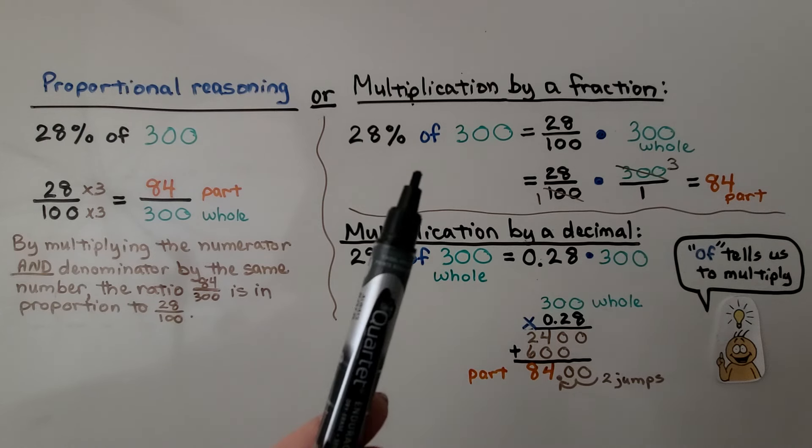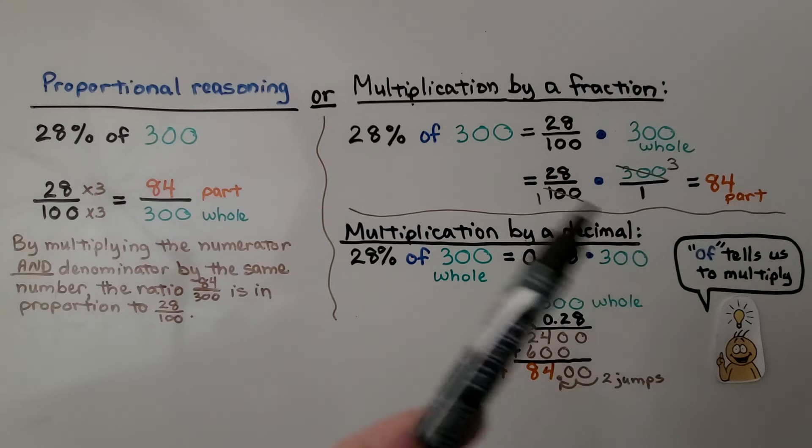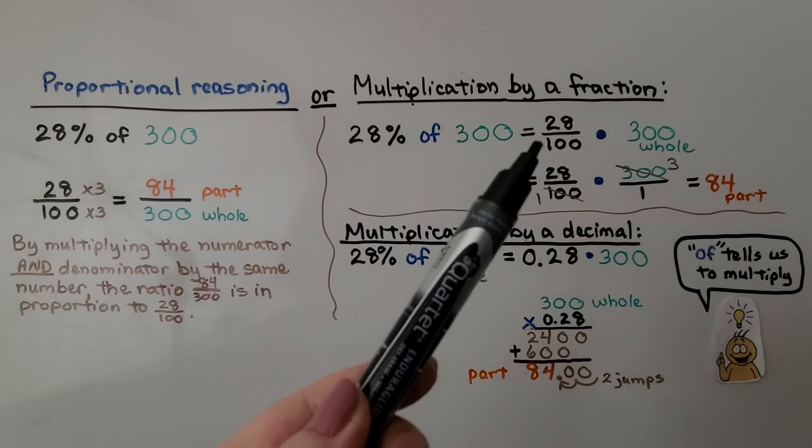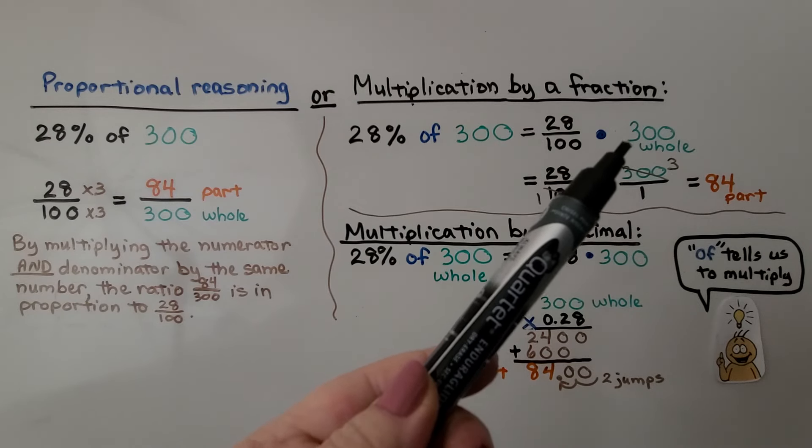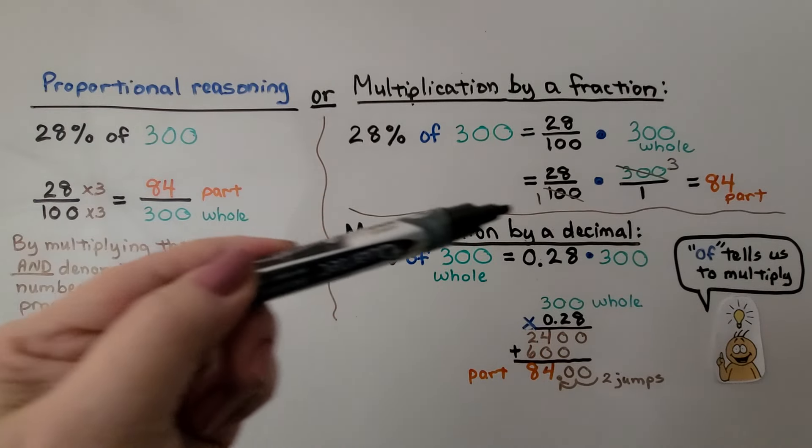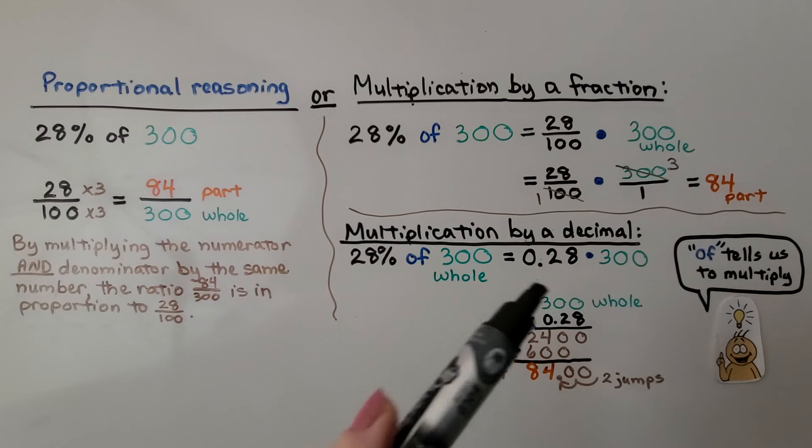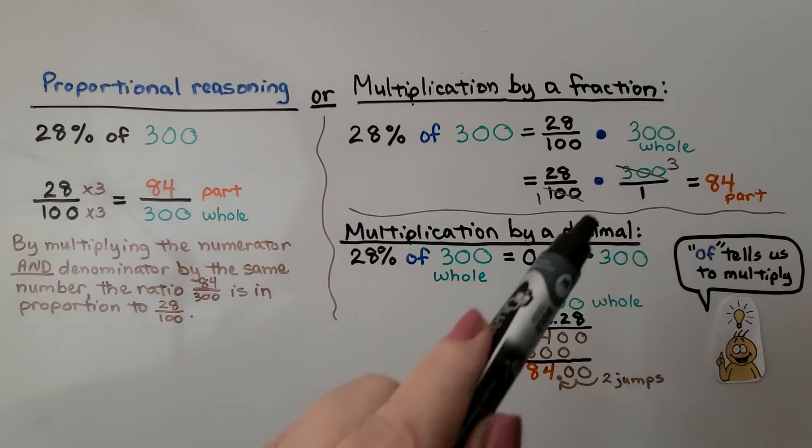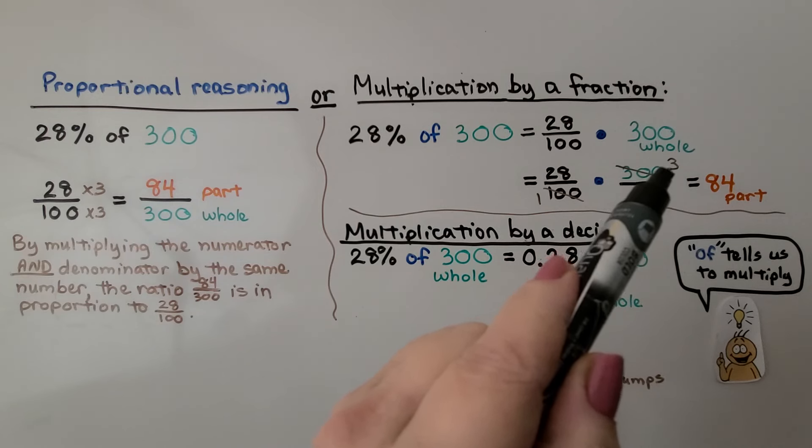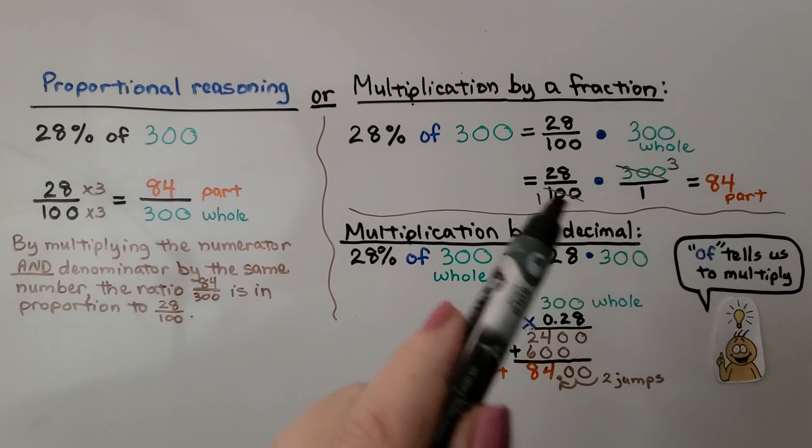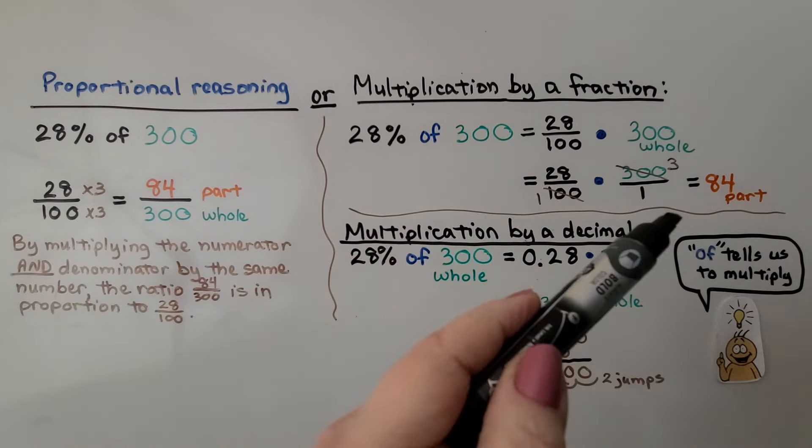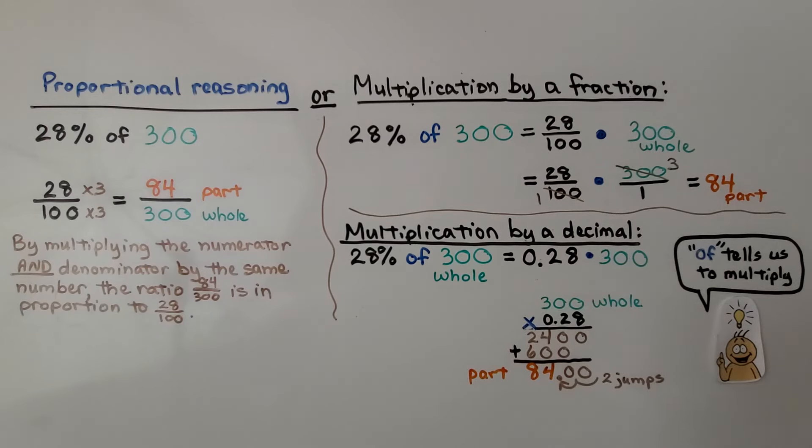We can also use multiplication. We think of 'of' telling us to multiply. We have 28% of 300. We think 28 hundredths times 300. We can write the 300 over a one, so we can multiply straight across. And we can use cross-canceling. For 300, we have three hundreds here, so we cross it out and make that a three. We have 100 here, so we cross it out and make a one. Now we have 28 times three over one, and that's 84. That's our part.